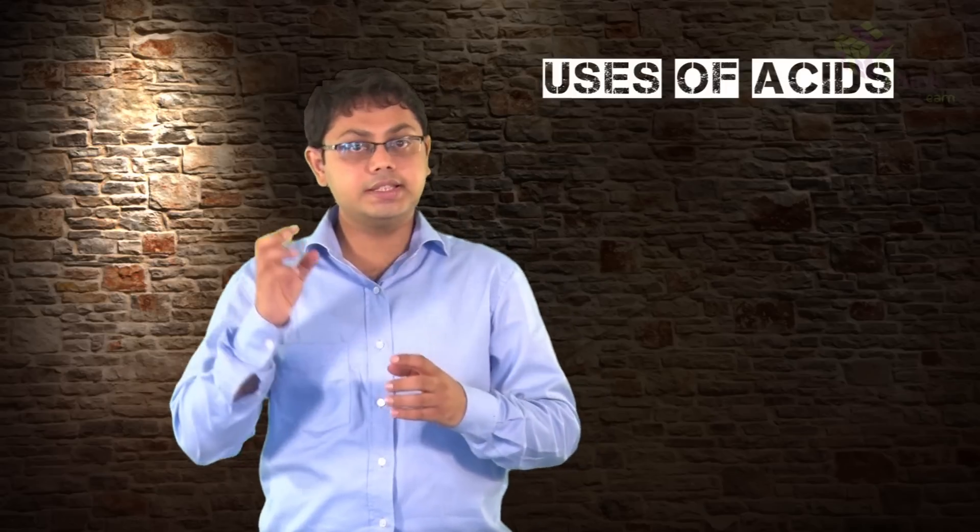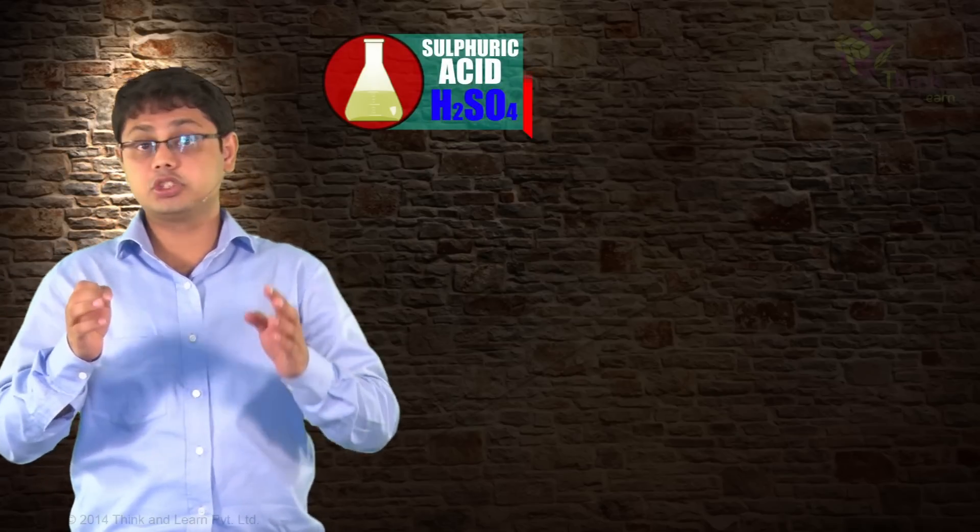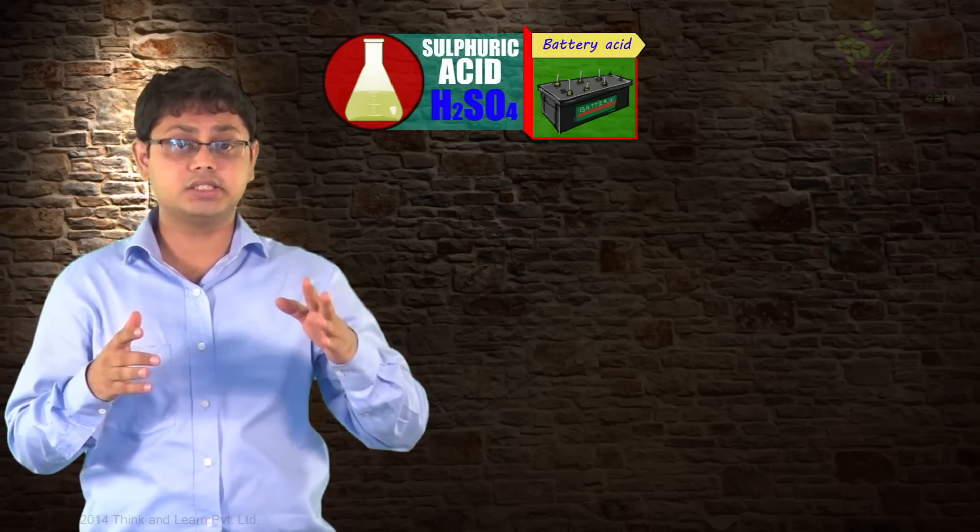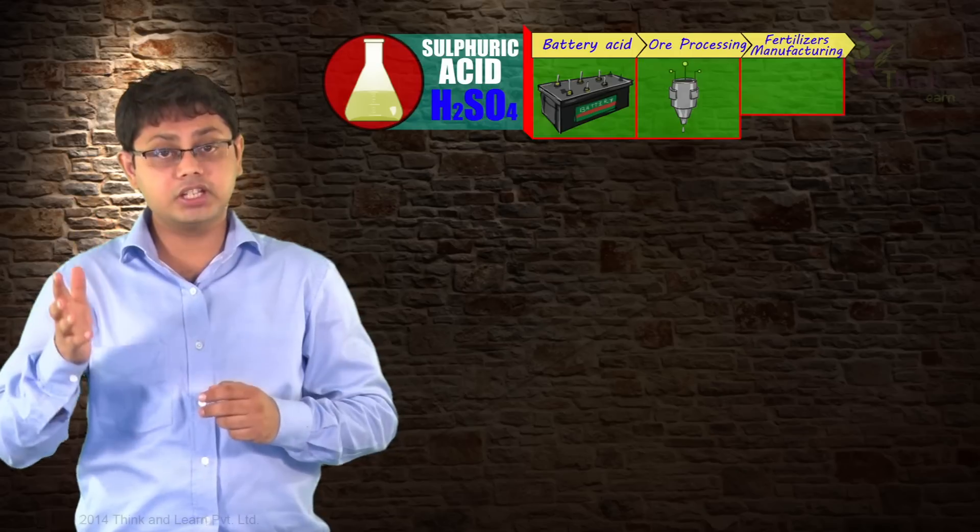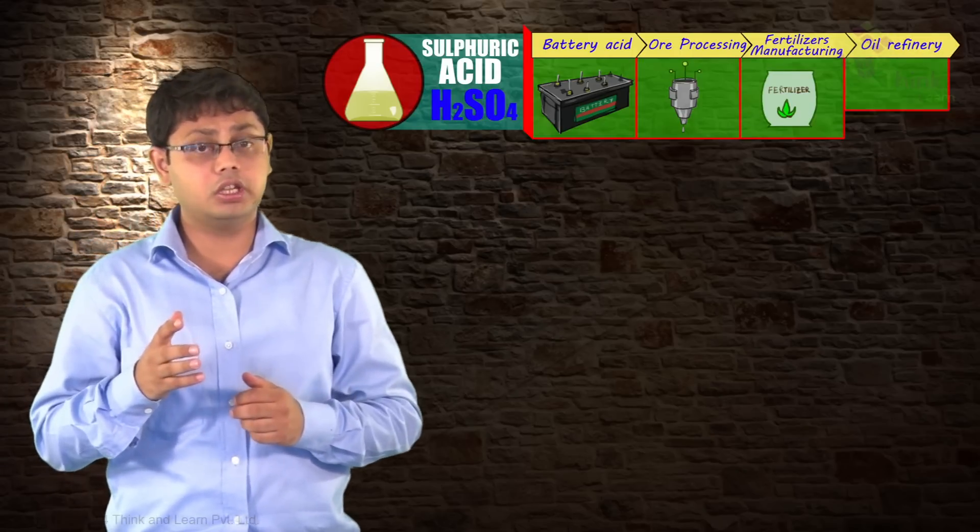Let's now understand where these acids are being used. Let's first talk about sulfuric acid. It's known as the king of all acids because it's used in battery acids, ore processing, fertilizer manufacturing, and in oil refining.